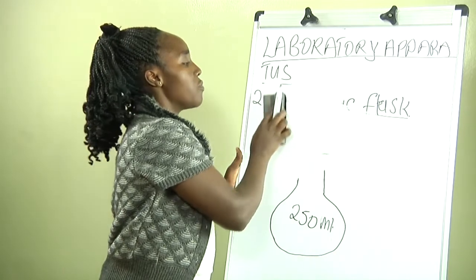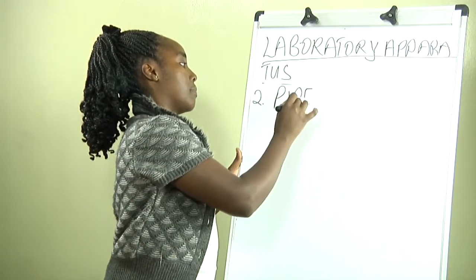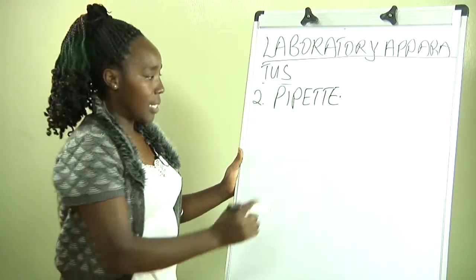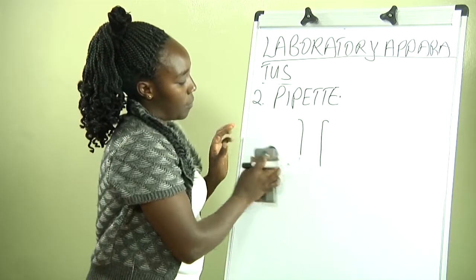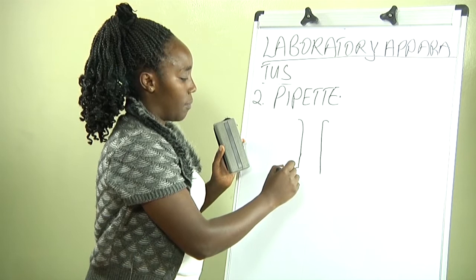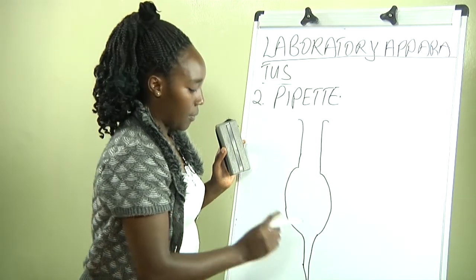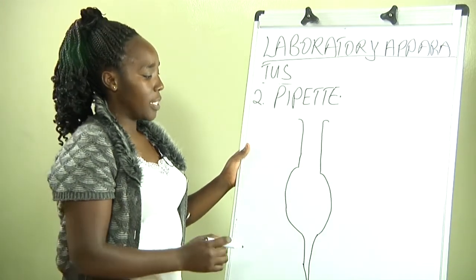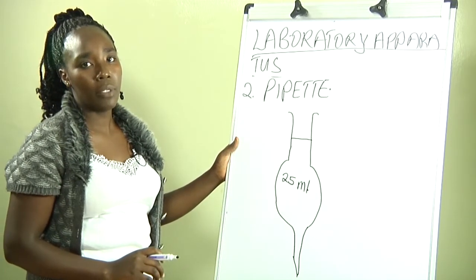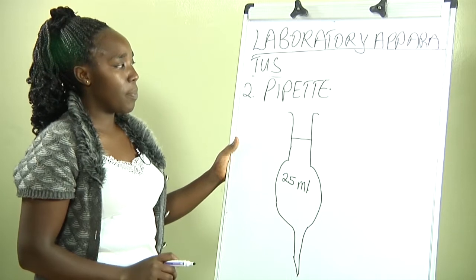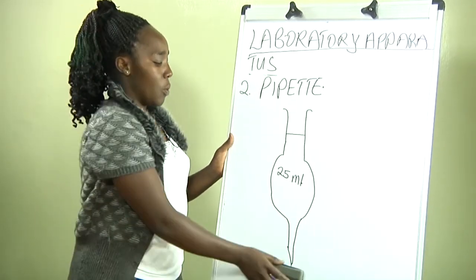We have another apparatus also used to fairly measure accurate volumes of liquids, and we call it a pipette. A pipette can carry about 25 ml of volume of a liquid, and it also has a white line or a blue line. So if we put in our liquid in our pipette, it has to reach that level for it to measure exactly 25 ml of volume.